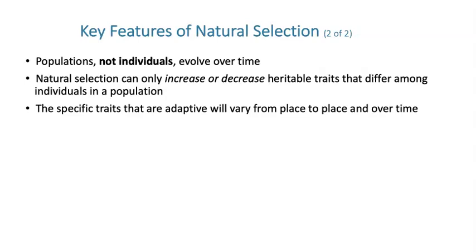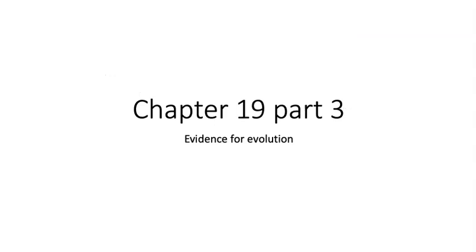Natural selection can only increase or decrease the frequency of a trait among individuals in a population — it doesn't cause a new variation to exist by itself. We need a mutation for that to happen. Specific traits that are adaptive also vary from place to place and over time: a trait that works well in environment A might not work in environment B, and what worked well in the past may not work as well today. These are all key to understanding Darwin's big ideas.